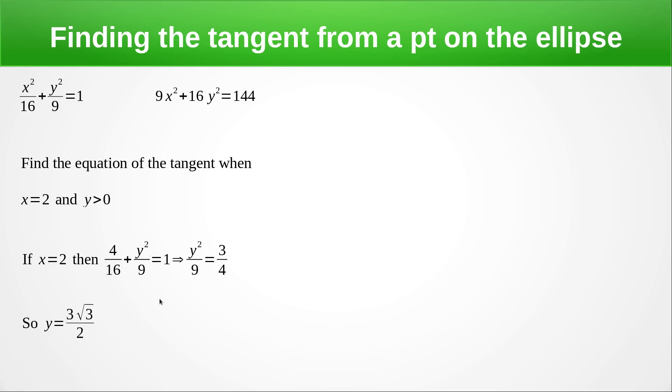Square root both sides would be plus or minus this but we've got y > 0. So we've got an x value and we've got a y value. The next thing we need is a gradient.